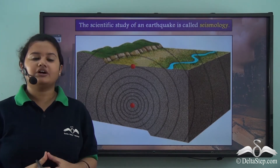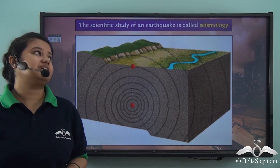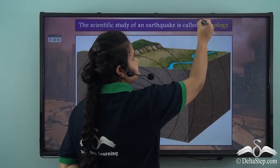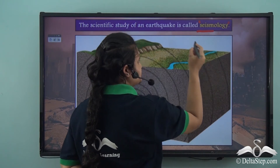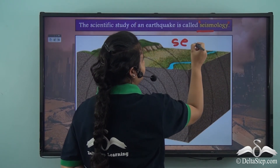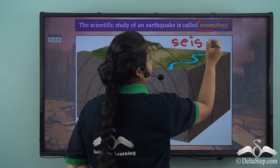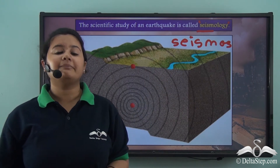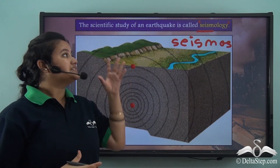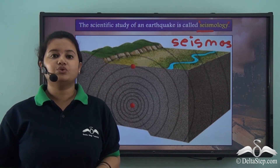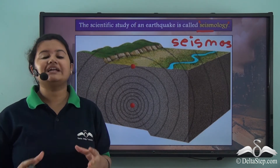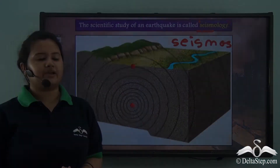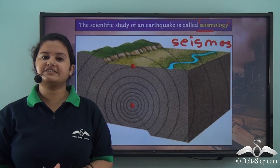The scientific study of earthquakes and their formation is called Seismology. The word Seismology originates from the Greek word 'Seismos', where Seismos means earthquake. Thus, Seismology refers to the study of earthquakes and related activities, like the waves that are produced during an earthquake. So now we know what an earthquake is.